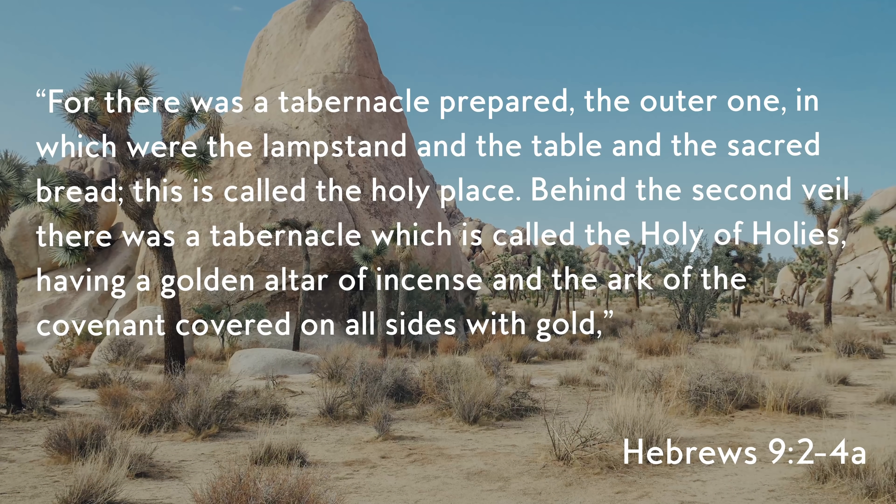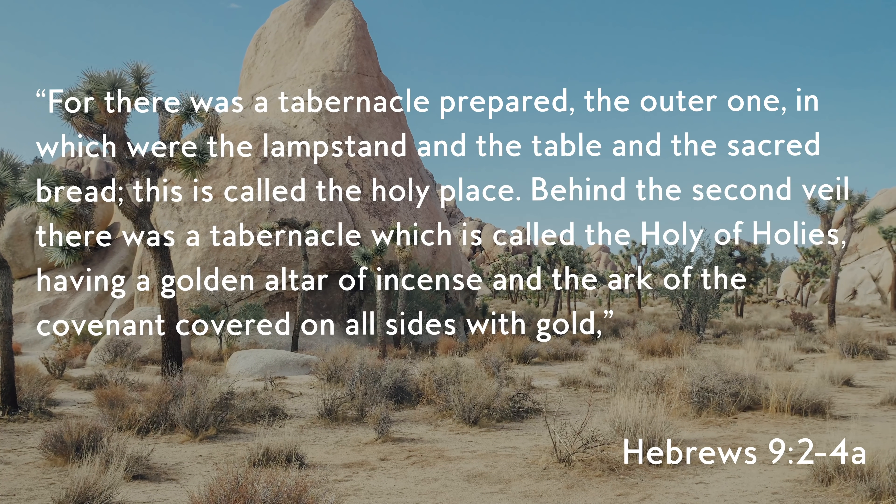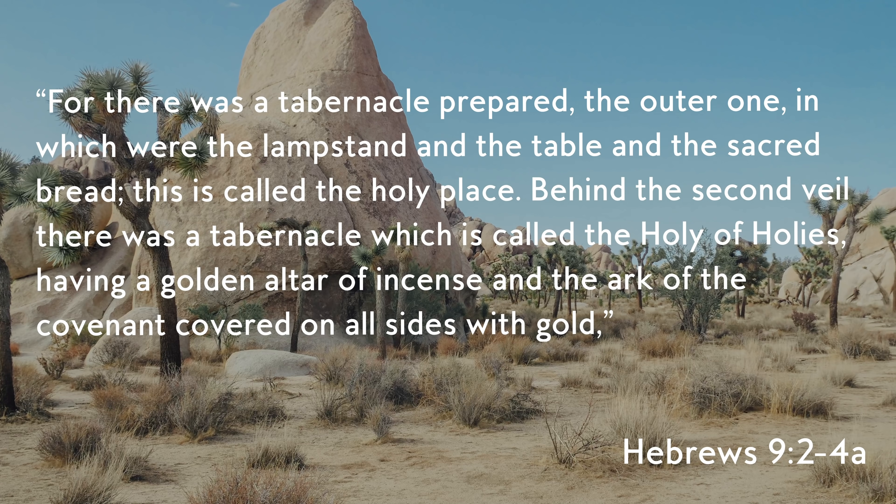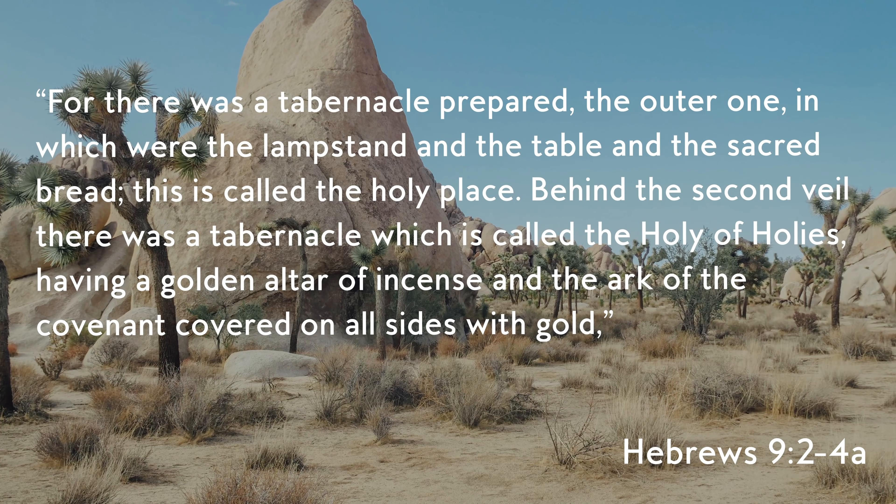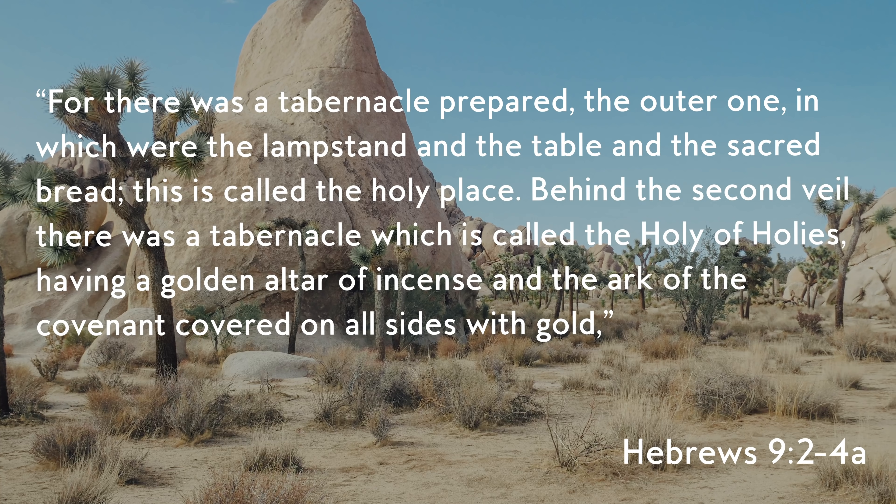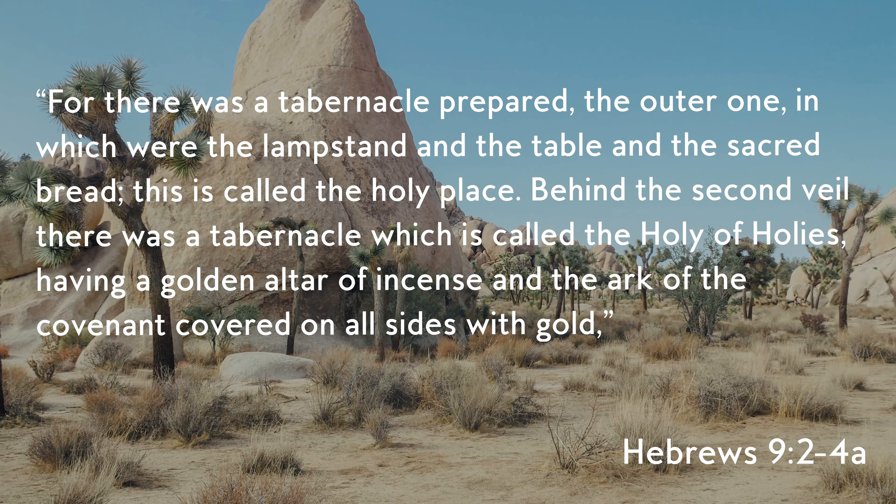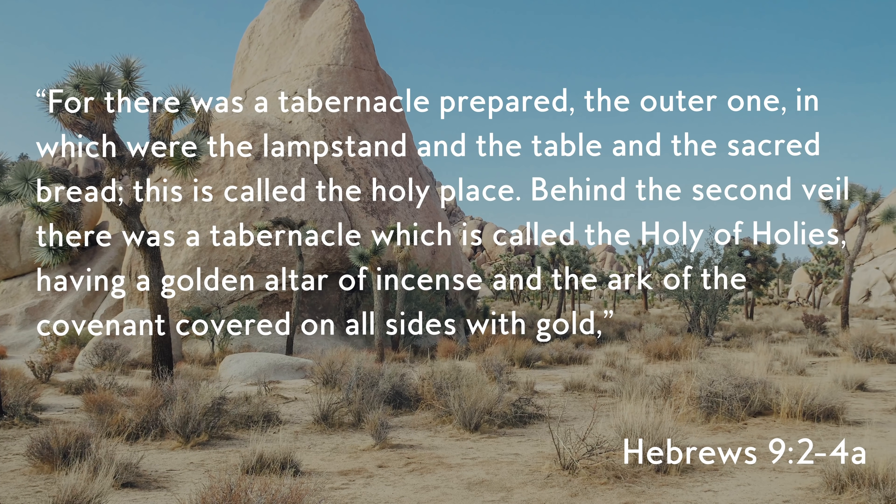So this is Hebrews chapter nine, and this is starting in verse two. It says, for there was a tabernacle prepared, the outer one in which were the lampstand and the table and the sacred bread. This is called the holy place. Behind the second veil, there was a tabernacle, which is called the holy of holies, having a golden altar of incense and the ark of the covenant covered on all sides with gold. So this is talking about the tabernacle that the Israelites built based on God's design in the wilderness.